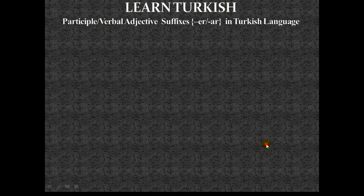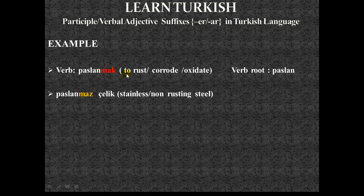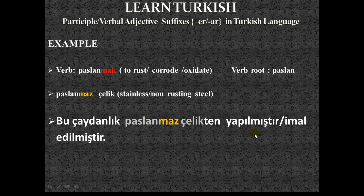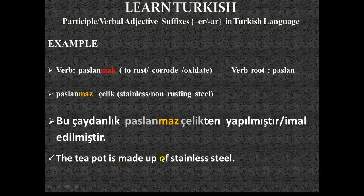Our next verb is 'paslanmak,' meaning to rust or oxidize. The verb root is 'paslan.' 'Paslanmaz çelik' becomes stainless or non-rusting steel — stainless steel. Example: 'Bu çaydanlık paslanmaz çelikten yapılmıştır' or synonymously 'Bu çaydanlık paslanmaz çelikten imal edilmiştir.' Note that 'yapılmıştır' and 'imal edilmiştir' can be used interchangeably as synonyms. Translation: This teapot is made of stainless steel.